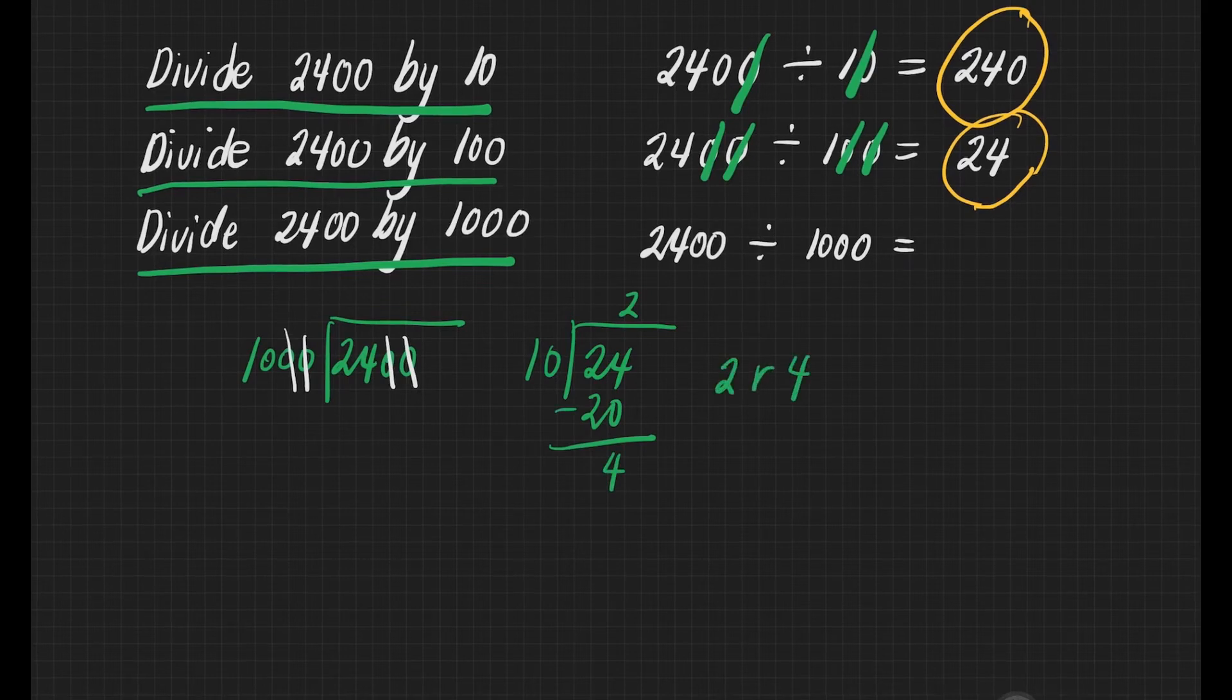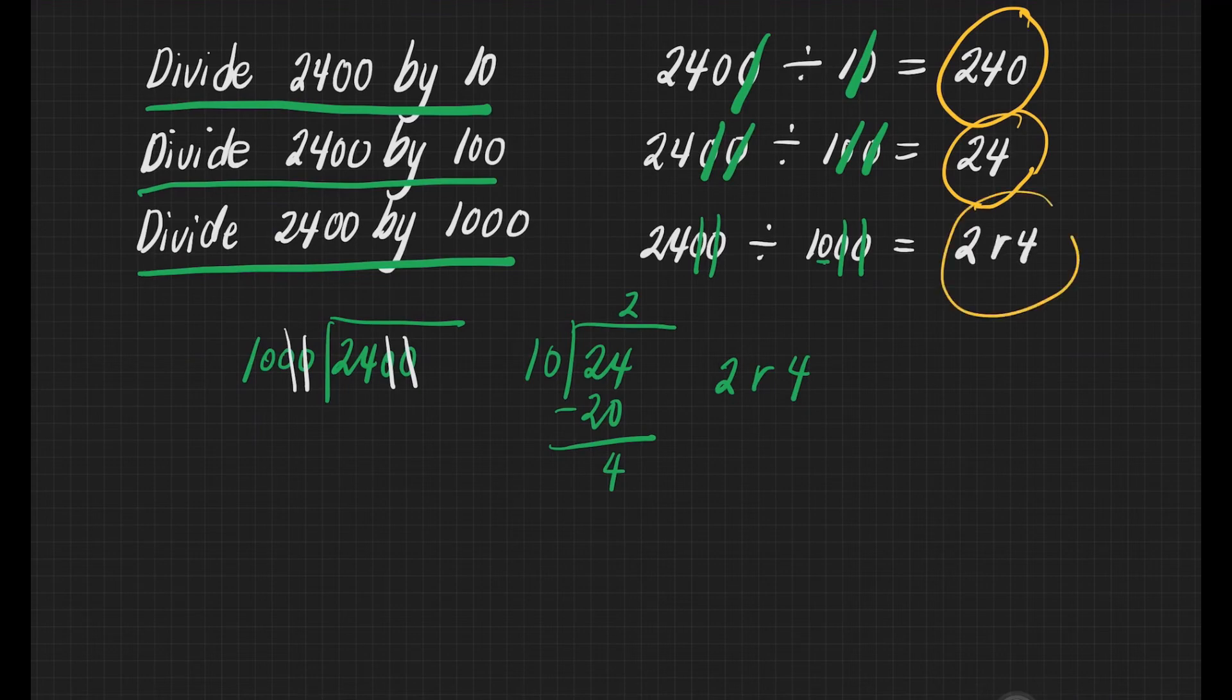For the shortcut, we can cancel two zeros first. That's 1 and 2. What's left is 24 divided by 10. Since we have one zero here, it means it has also one remainder. That will give us two. Then, we will have remainder four. And that's it.